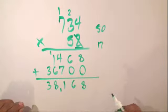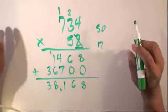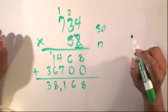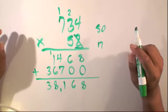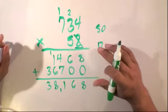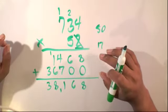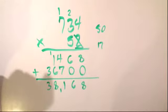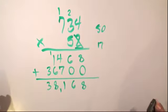And we just have a 3, so we'll carry it down. And as you can see, our final answer is 38,168, which is a very large number. But when you're multiplying numbers together, the number gets very large fast. So, this is a multiplication problem.